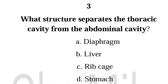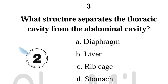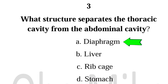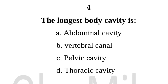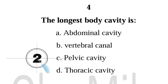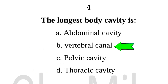Number 3. What structure separates the thoracic cavity from the abdominal cavity? Diaphragm. Number 4. The longest body cavity is: Vertebral canal.